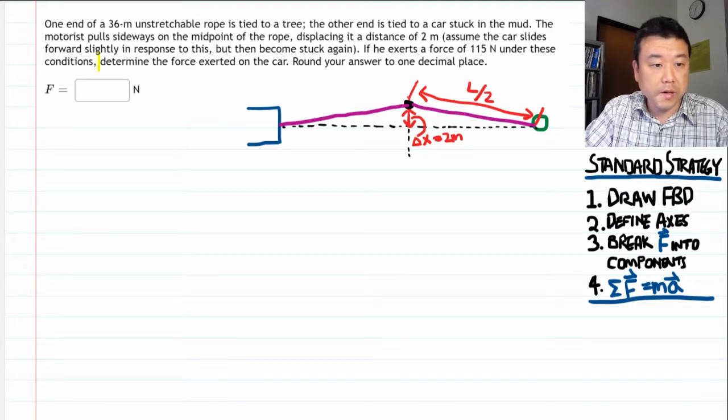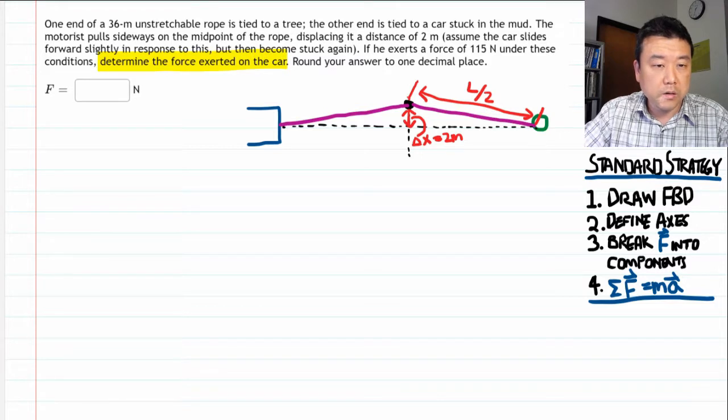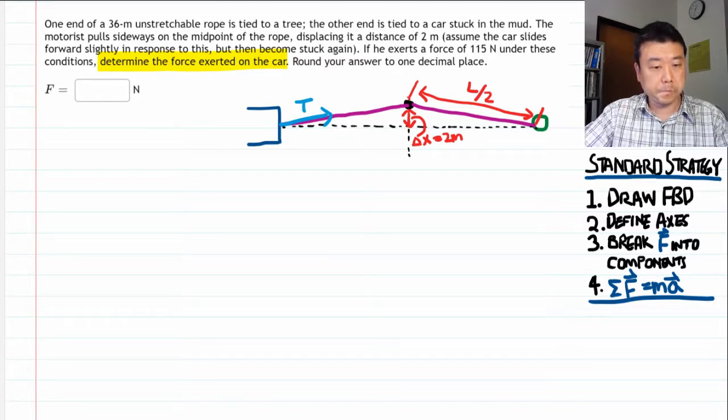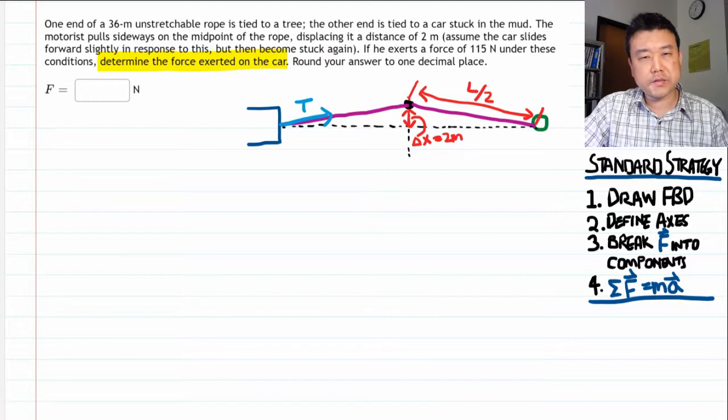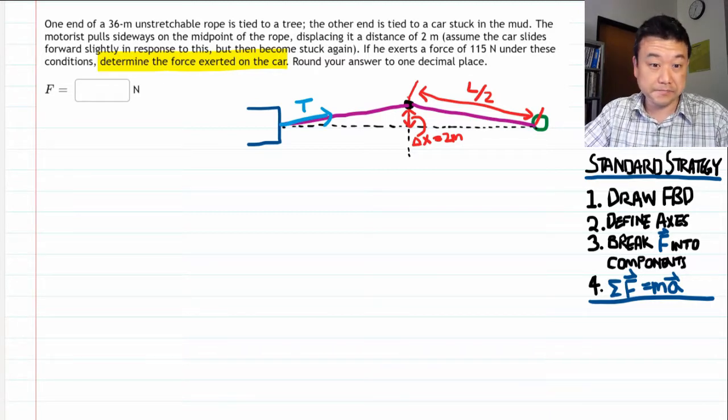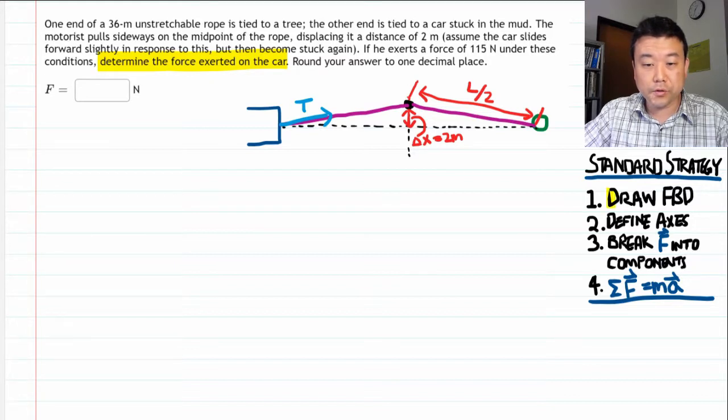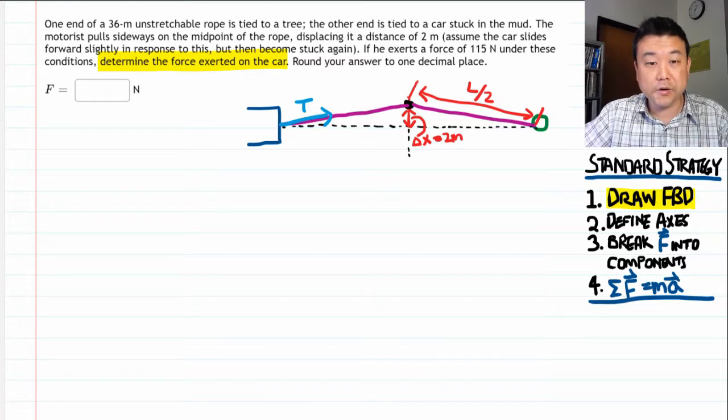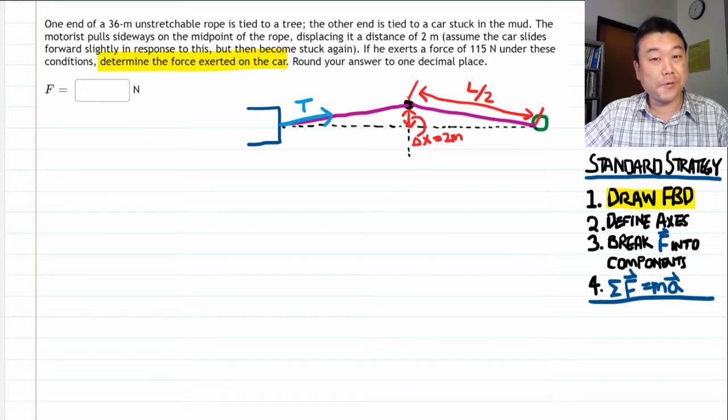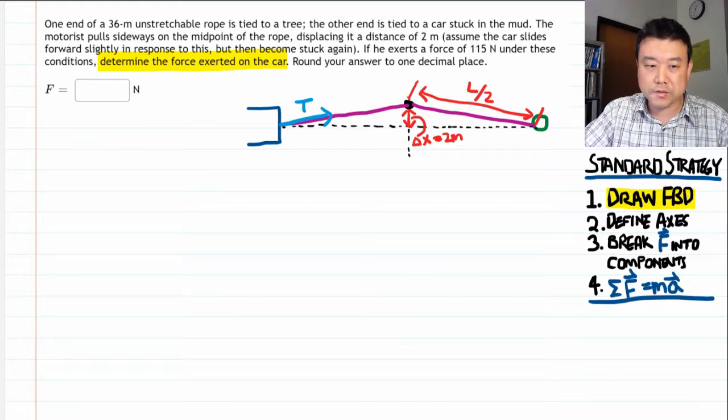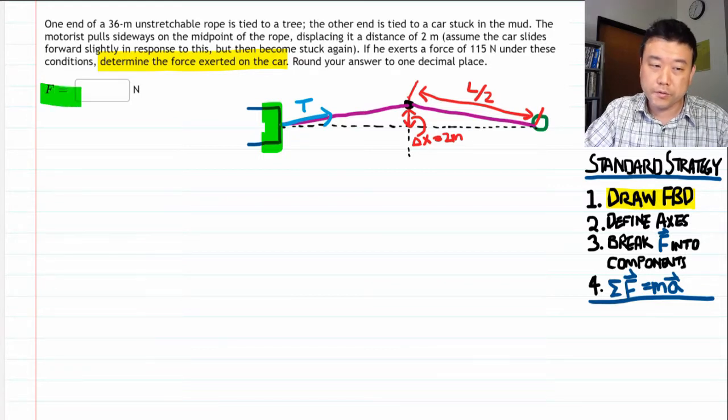All right, the question says determine the force exerted on the car. So I guess it's asking for tension force exerted on the car. All right, so I guess here there is a pre-standard strategy. By pre, I mean we need to draw free body diagram, which means we are drawing a diagram of forces acting on something. So the question is, what is that something? I hope after a short bit of thinking, you see that it's not the force on the car that we want to diagram. Because if we knew that, then we would know the answer already.